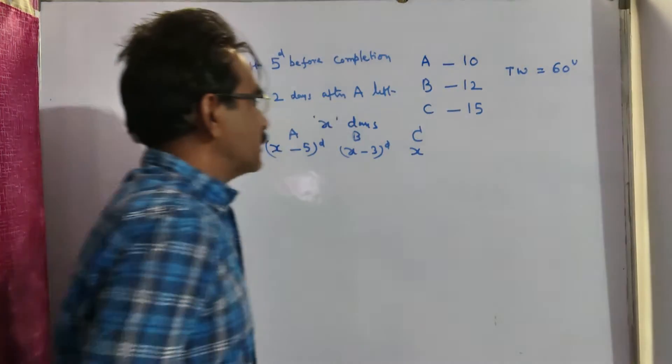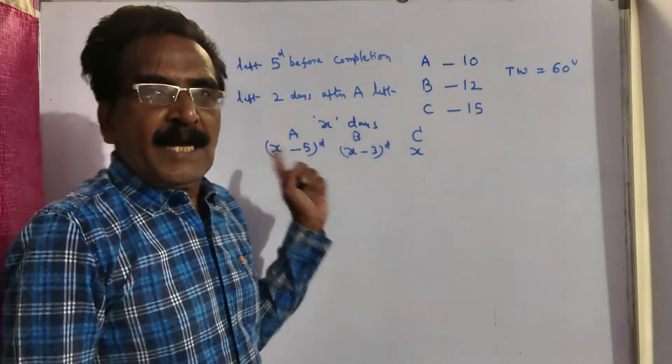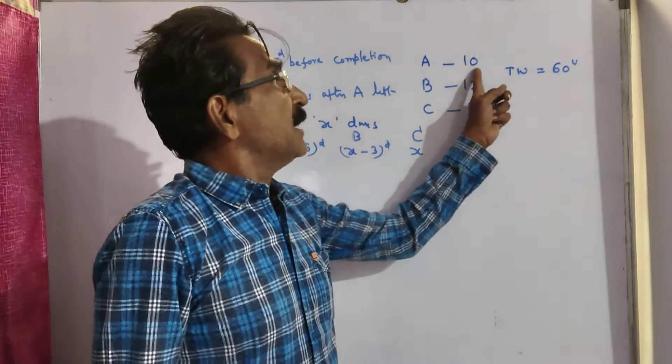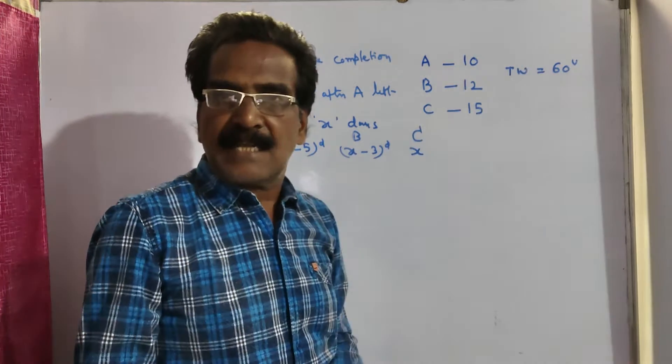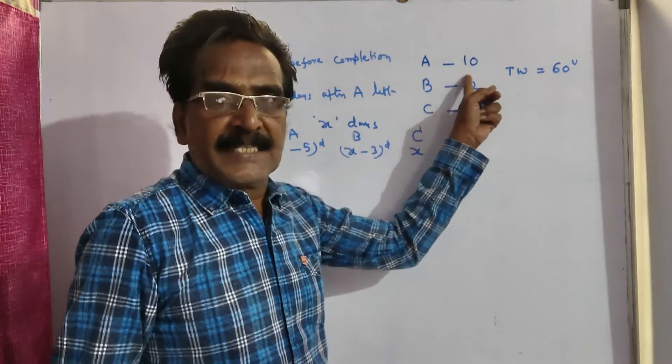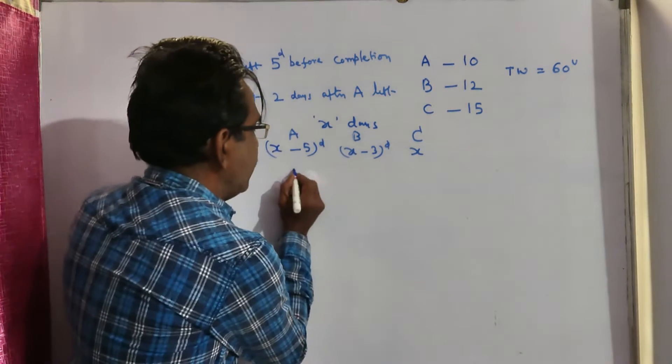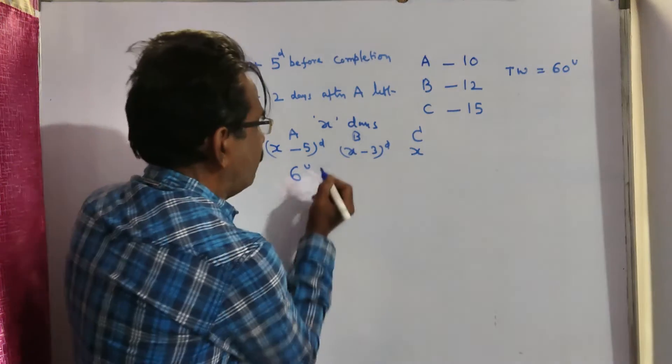Now, let us see, how many units of work will A do per day? A can complete the total 60 units of work in 10 days. So, A can do 6 units of work per day.